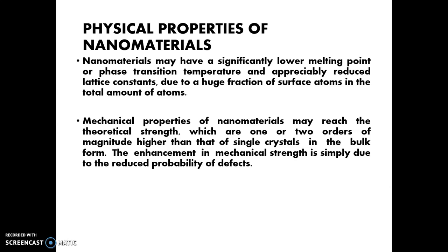The enhancement in mechanical strength is due to the reduced probability of defects. This can be achieved by the reduction of defects. In bulk formation, we have a maximum number of defects and impurities. But in the nanoparticle, we have fewer atoms, and those atoms are well-defined. Due to that, the different defects are very, very less — defects and impurities are very less — so we are getting high mechanical properties.